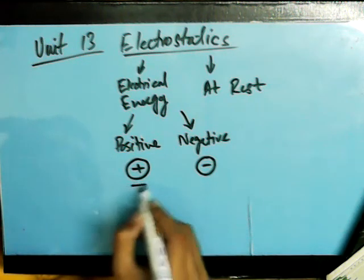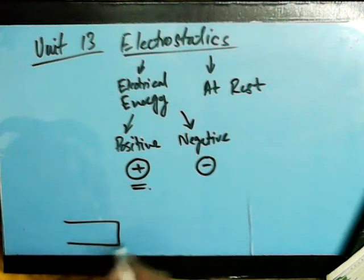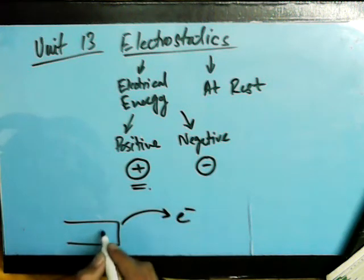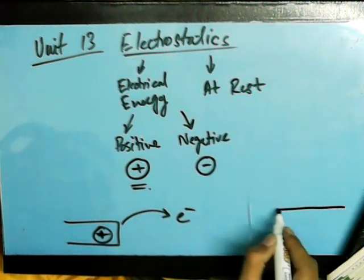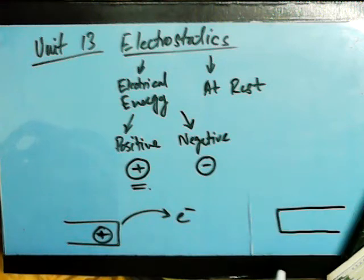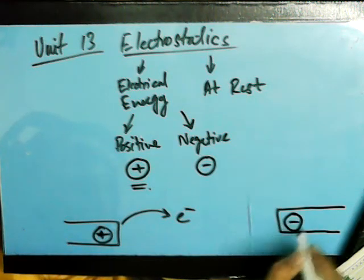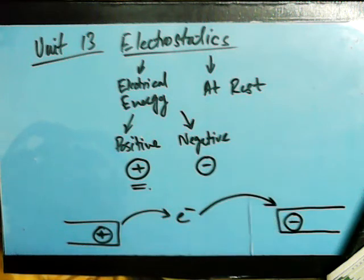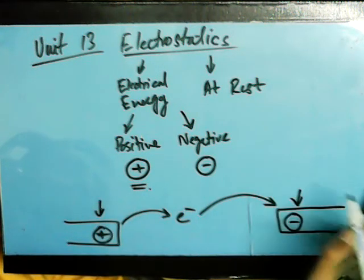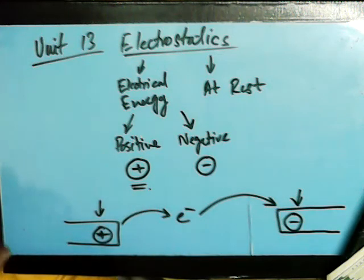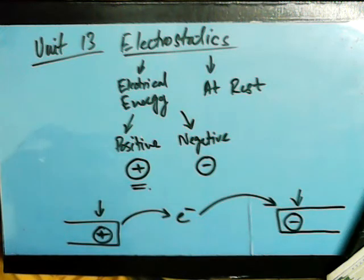If we want to create a positive charge, this is an object from which, if we take away the electrons, there will be a positive charge left. And if we are trying to consider a negative charge object, we mean that an electron entered this object. So this would create charges — this is positively charged, and this is negatively charged.